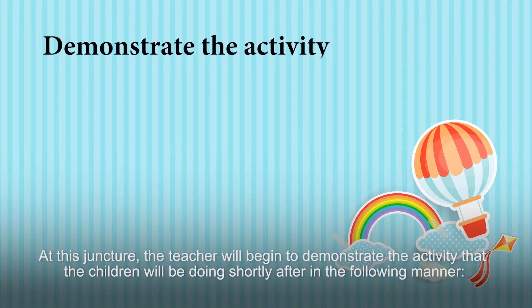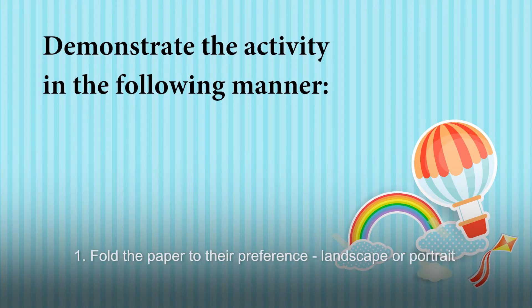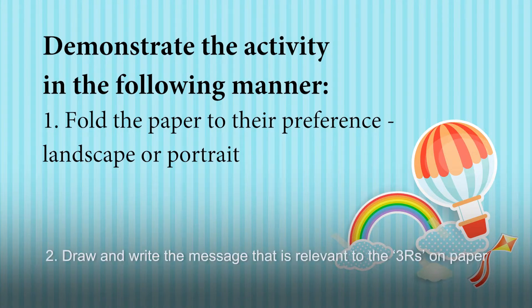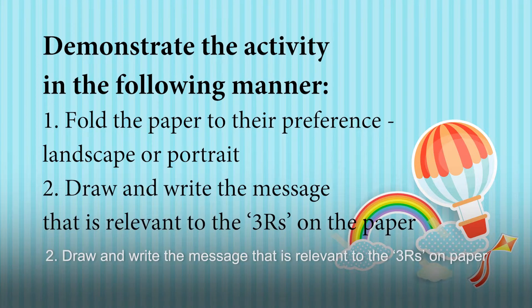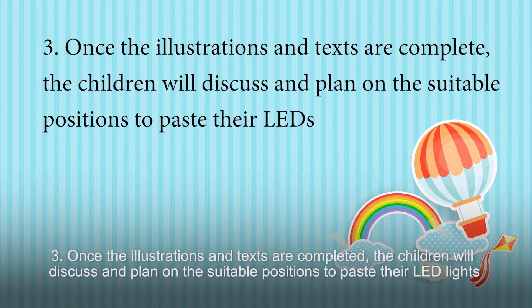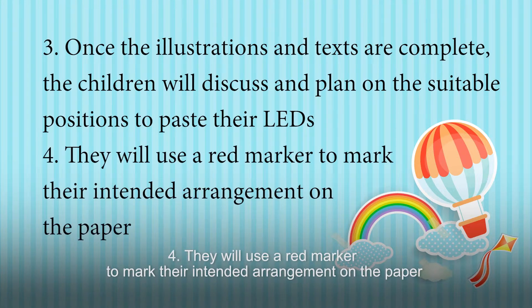At this juncture, the teacher will begin to demonstrate the activity that the children will be doing shortly after, in the following manner: 1. fold the paper to their preference, landscape or portrait; 2. draw and write the message that is relevant to the three Rs on paper; 3. once the illustrations and texts are complete, the children will discuss and plan on the suitable positions to paste their LED lights; 4. they will use a red marker to mark their intended arrangement on the paper.